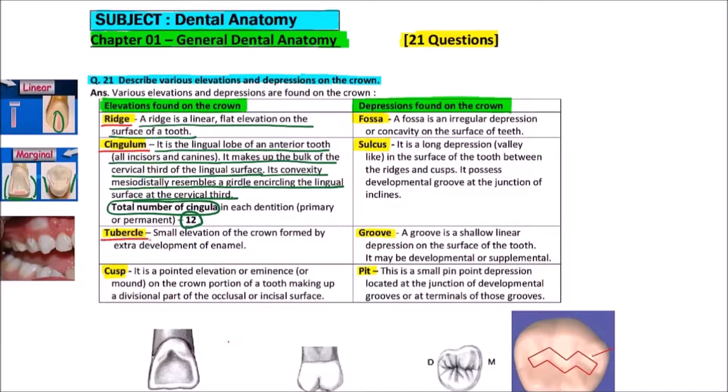Now, the next one is tubercle. Small elevation of the crown formed by extra development of enamel. We can observe the tubercle somewhere here. This is tubercle.